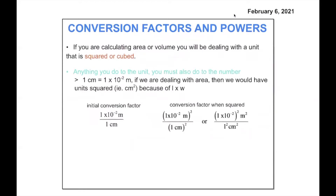The last thing about conversion factors: sometimes we're going to have numbers and units that need to either be squared or cubed. For example, area is length times width, and so if you square the number, you have to square the unit. If we have 5 centimeters times 5 centimeters in terms of area, we square the number — 5 times 5 is 25 — and then we have centimeters squared.